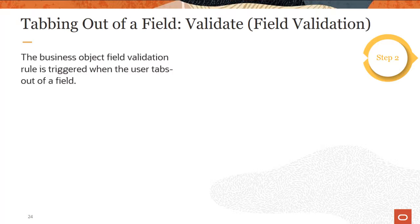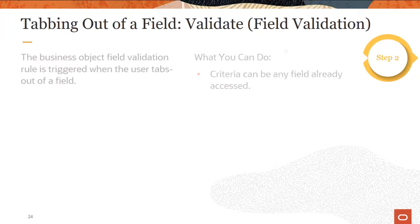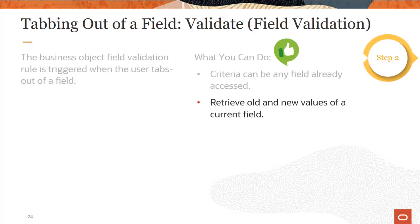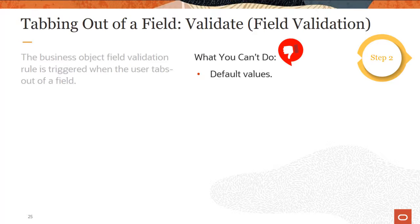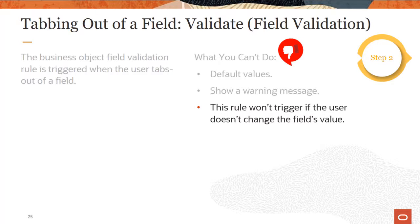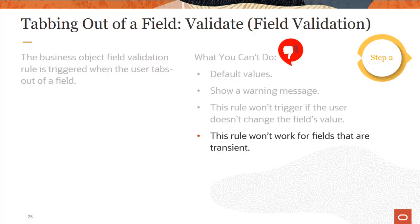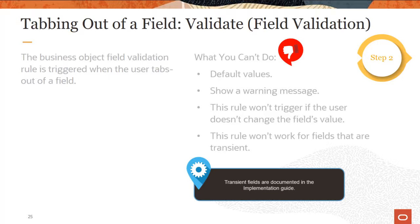The business object field validation rule is triggered first when the user tabs out of a field. You can base the criteria for validation on any field that's already been accessed by the user in the current or previous sections, or any field that has already been set up as part of workforce structure setup. You can retrieve old and new values of a field. The things that you can't do include default values or show a warning. Also, if the user doesn't change the value in the field, this rule won't trigger. Certain fields in the UI are transient, which means they exist only in the UI and not in the data model; this rule won't work for those fields. Transient fields are listed in the documentation.